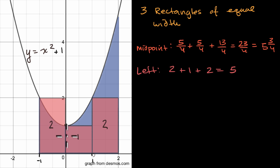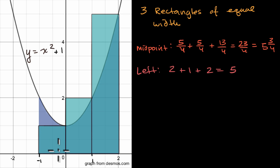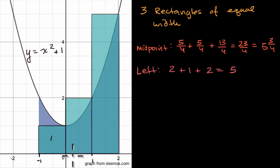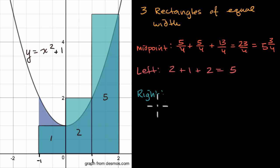We could also look at the right endpoints of our intervals. The first rectangle's right endpoint is zero: zero squared plus one is one, height of one times width of one gives an area of one. The second rectangle's right endpoint is one: one squared plus one is two, times width of one is two. The third rectangle's right endpoint is two: two squared plus one is five, times width of one is five. So using right endpoints, we get one plus two plus five, which equals eight.